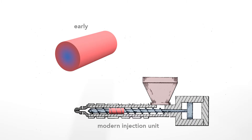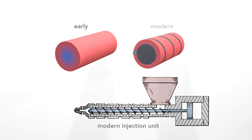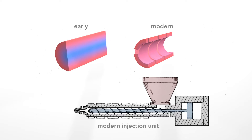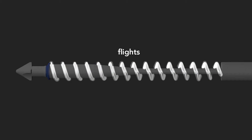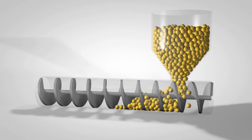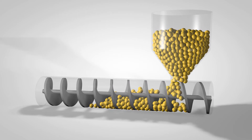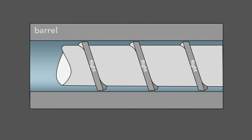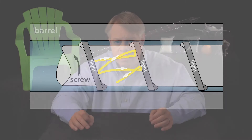The reciprocating screw overcomes this in three ways. First, in modern units, the plastic fills only the space around the shaft of the screw. This eliminates the cooler central region, leaving a thinner, evenly heated layer of plastic. Second, the screw has flights that wrap around the shaft. As the screw rotates, the flights transport the raw material forward through the barrel. The flights also serve to mix the plastic — the screw action agitates the melting pellets within the flights to create a uniform mixture.